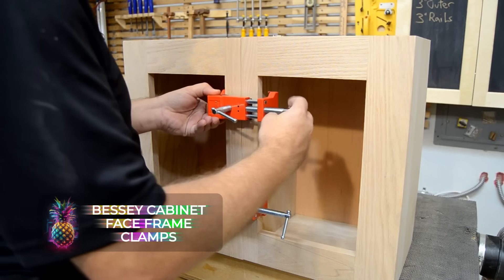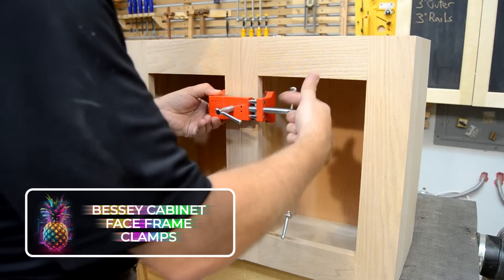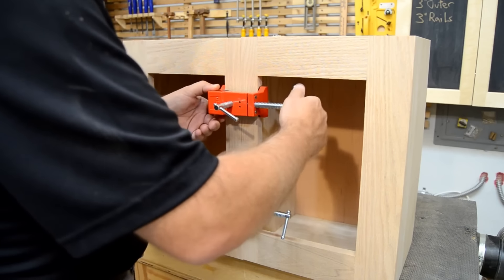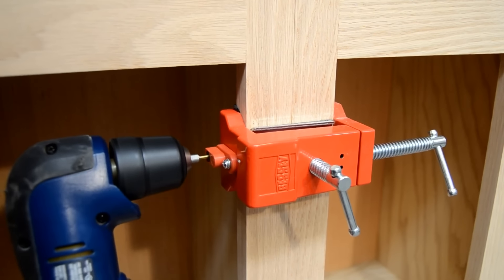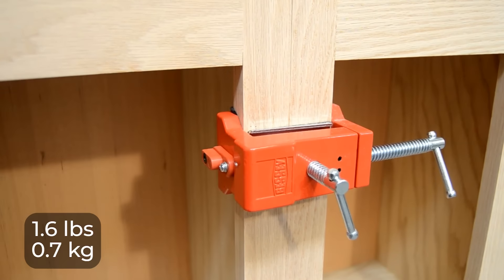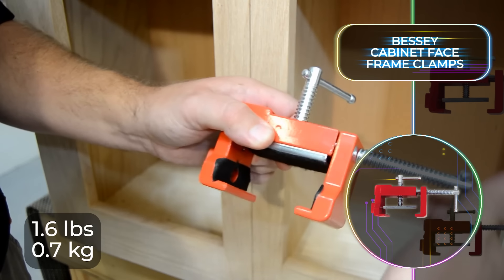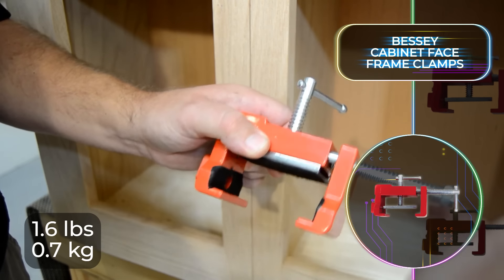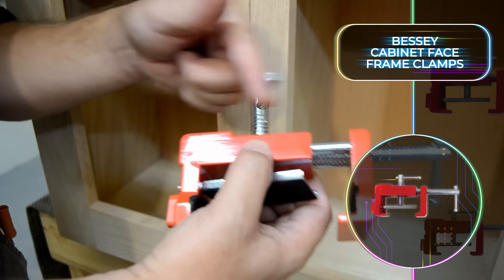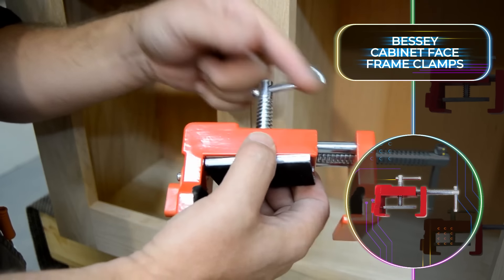Bessie Cabinet Face Frame Clamps. According to the manufacturer of this innovative clamp, it has the potential to streamline your workflow like never before. The Bessie Cabinet Face Frame Clamp is crafted from ultra-durable aluminum steel and weighs a convenient 1.6 pounds or 0.7 kilograms. It does pack a powerful clamping force of up to 2,000 newtons.